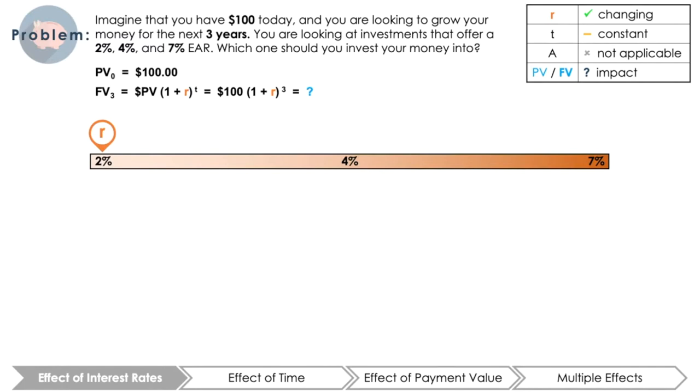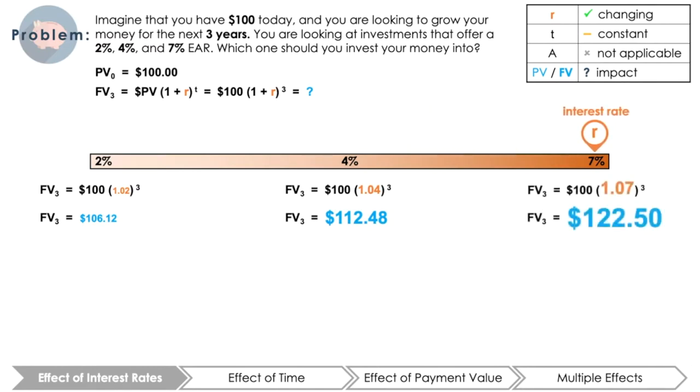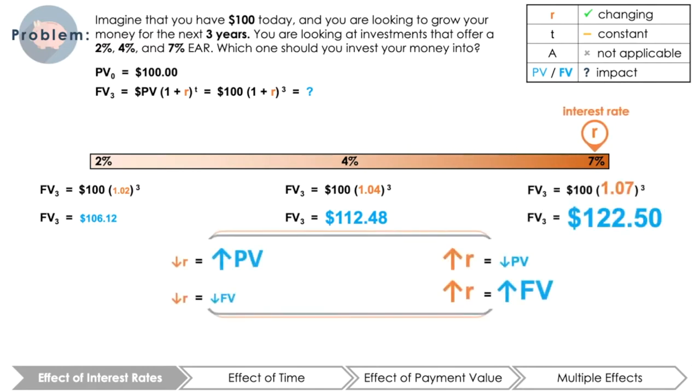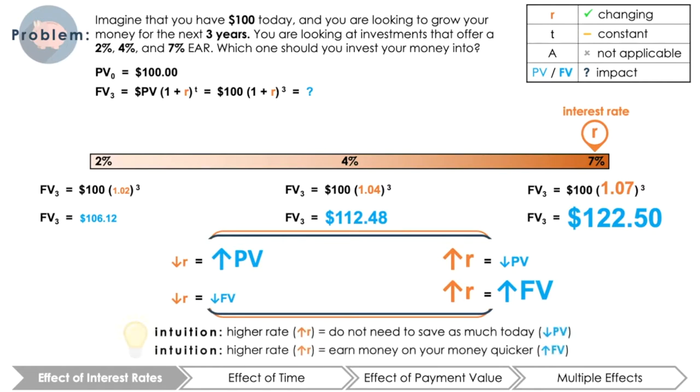Here, R might be referred to as the interest rate because it is telling us how much interest we earn in growing our money. However, the interest rate here has the same mechanics as the discount rate in the previous example. The future value three years from now of your $100 when investing into the investment vehicles with varying effective rates are $106.12 at 2%, $112.48 at 4%, and $122.50 at 7%. As expected and mentioned before, the higher the rate, the larger the initial value grows within the same amount of time.